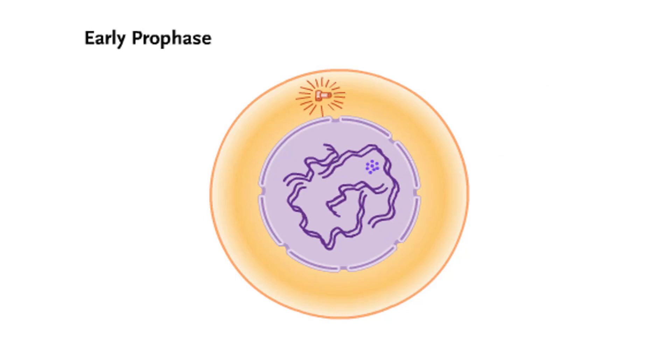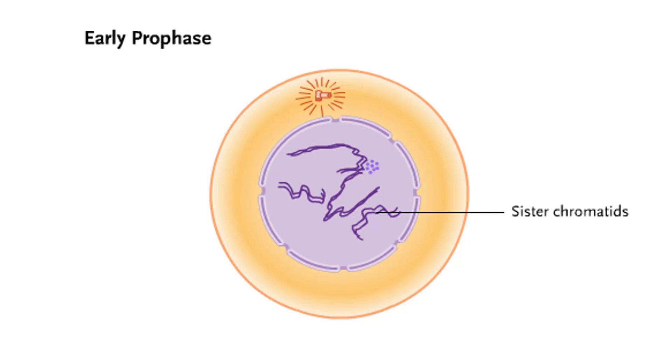In early prophase, the duplicated chromosomes begin to condense. Each chromosome consists of two sister chromatids joined at the centromere.